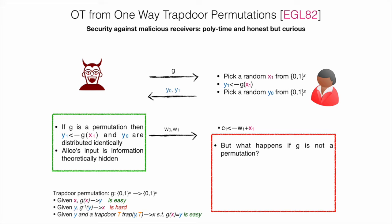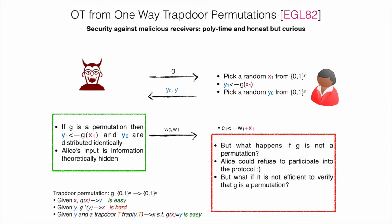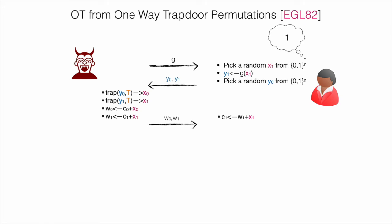But we should observe that this claim is true only if g is a permutation. If g is not a permutation, Alice might figure this out and refuse to participate in the protocol. If a trapdoor permutation has the property that any party can efficiently verify whether it is a permutation just by inspection, we say that the trapdoor permutation is self-certifiable. But what if the function does not have this property? Indeed, we know that there are trapdoor permutations that are not self-certifiable.